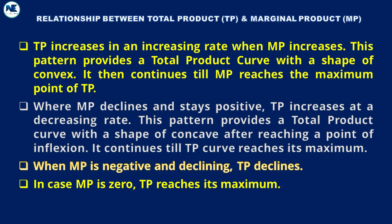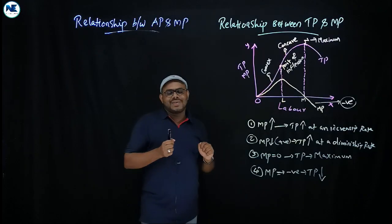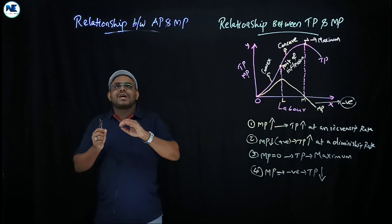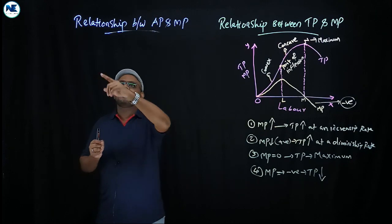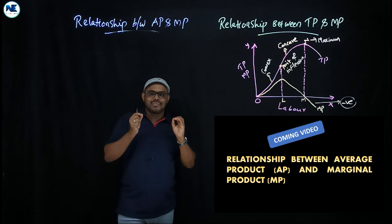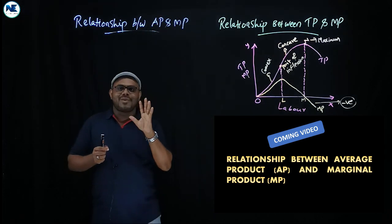So those are the four relationships between total product and marginal product. In the next section, we are going to discuss the relationship between average product and marginal product, which is also a very simple and important topic.